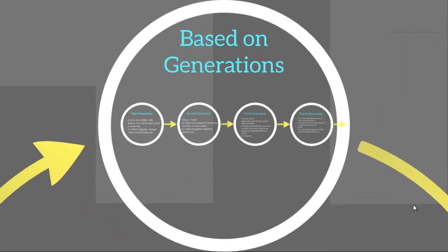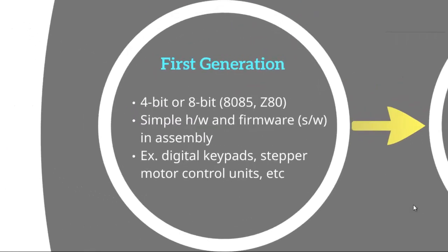Embedded systems have seen a lot of general trends since they entered the market, and we can divide the trends into four generations. In the first generation, 4-bit and 8-bit microcontrollers were used, like the 8085 or Z80. The hardware was simple in design and the software was mostly written in assembly. Examples of products include digital keypads and stepper motor control units.